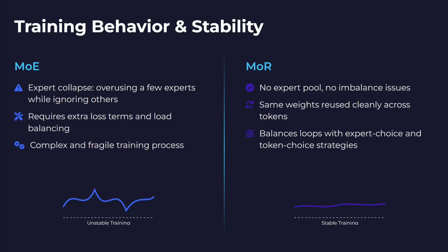On training behavior and stability, MoE suffers from expert collapse — overusing a few experts while ignoring others. It also requires extra loss terms, load balancing, and has very complex and fragile training. In the case of MoR, there is no expert pool and no imbalance issues. It's quite straightforward because you are not changing the architecture — you are just repeating the same weights.